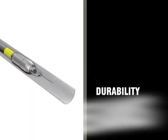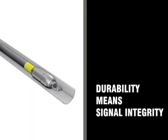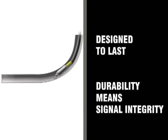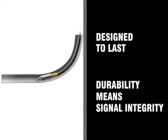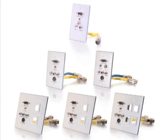Durable enough to withstand 30 pounds of pulling tension, Rapid Run connectors fit easily in 3-4 inch conduit with a 90 degree sweep. Plus, with your choice of wall plate colors and flying lead lengths, Rapid Run offers hundreds of configuration options.